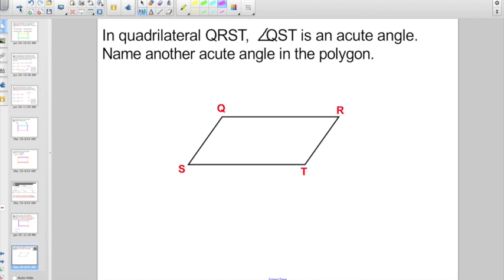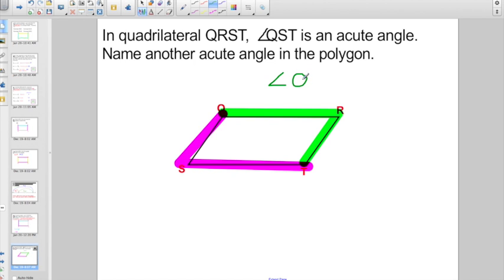So, now that we know that, check this out. In quadrilateral QRST, angle QST is an acute polygon. Let's see if we can recognize this. From Q down to S and then over to T. That guy is an acute angle because he's a cute little angle. So, name the other acute angle in this polygon. Well, it looks to me like this is the angle right here at R, right? So, to name him, he would be angle QRT. So, that's easy enough to do. We'll just give it an angle symbol, capital Q, capital R, and a capital T, right? That's how we name it. Not too tough.